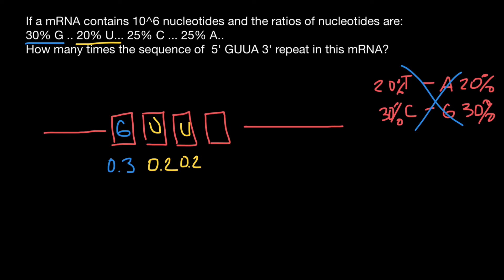And the last would be adenine. And probability that we will take random sequence and this is going to be adenine is going to be 25% or 0.25. So now we have to multiply all these independent probabilities. And we are going to get 0.003.